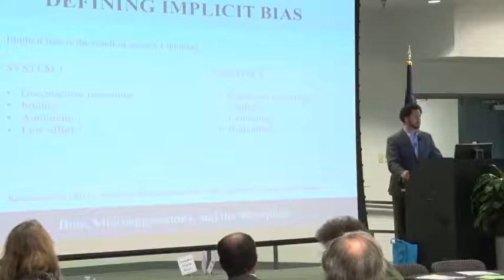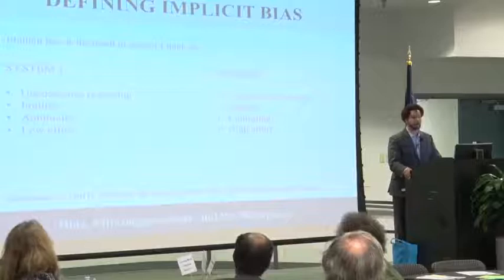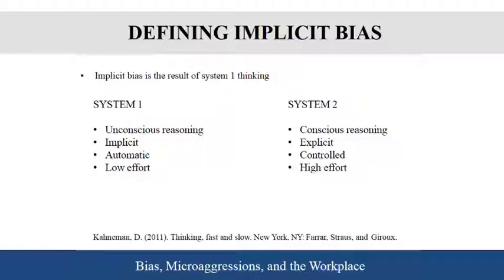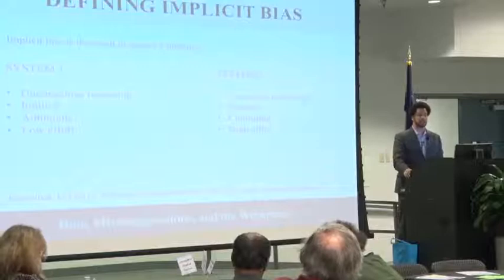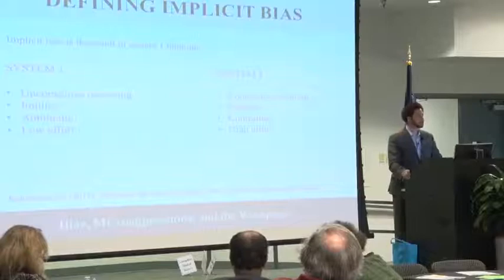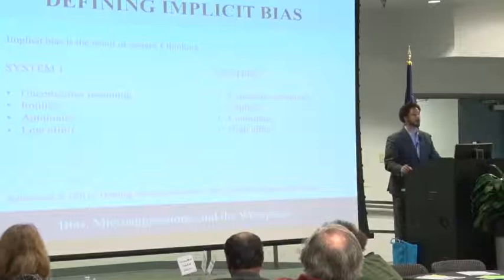That's the ultimate thing we'd like to shoot for. In reality, most of us are often operating on a System One level — engaging our unconscious mind, responding automatically, with lower effort. Our biases are most likely to be communicated when we're engaged in System One, when we're just responding, acting, pulling from that unconscious mind, engaging in efforts that are automatic and low effort.